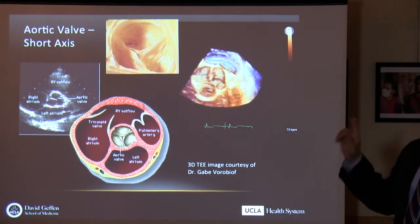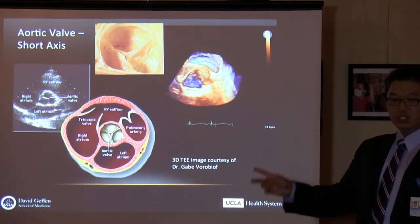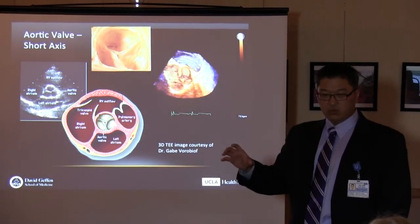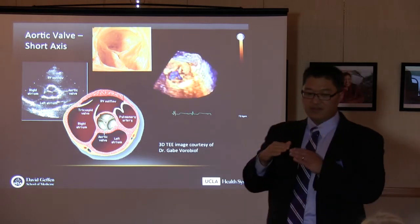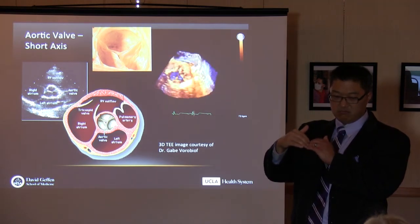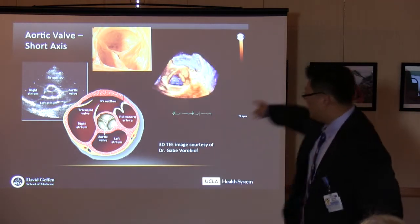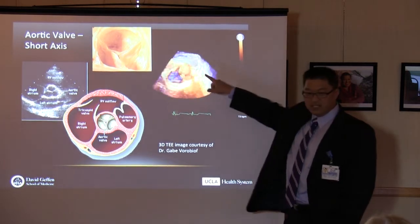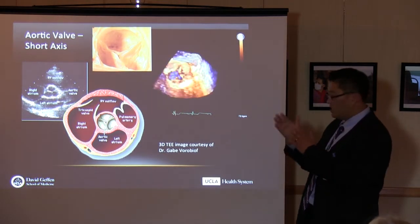What is the aortic valve? There are four major valves in the heart. On the right side are the tricuspid valve and the pulmonic valve; on the left side are the mitral valve and the aortic valve. The aortic valve separates the left ventricle — the main pumping chamber — from the aorta, the main artery of the body. The purpose of the valve is to open to let blood flow out, and then to close to prevent blood from coming back into the heart — it only allows flow in one direction.